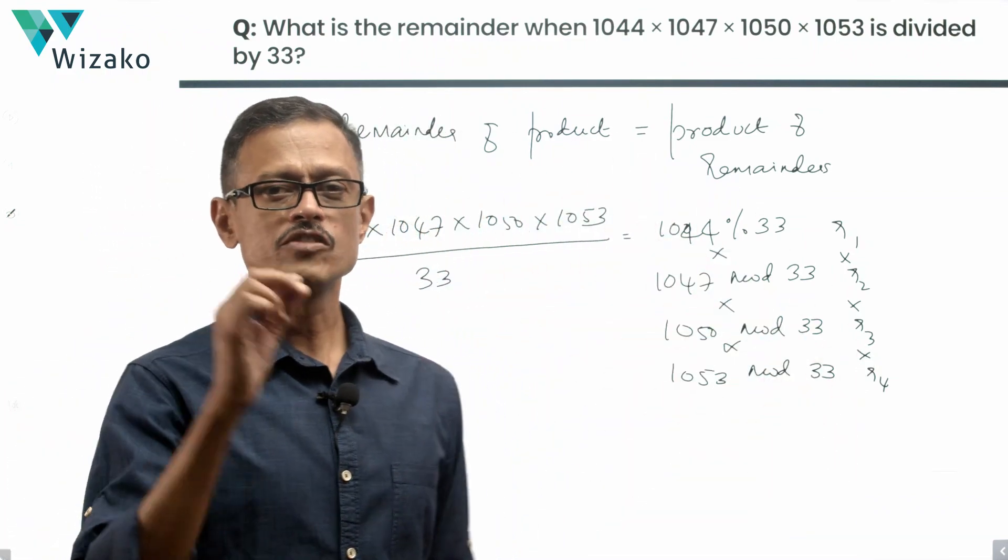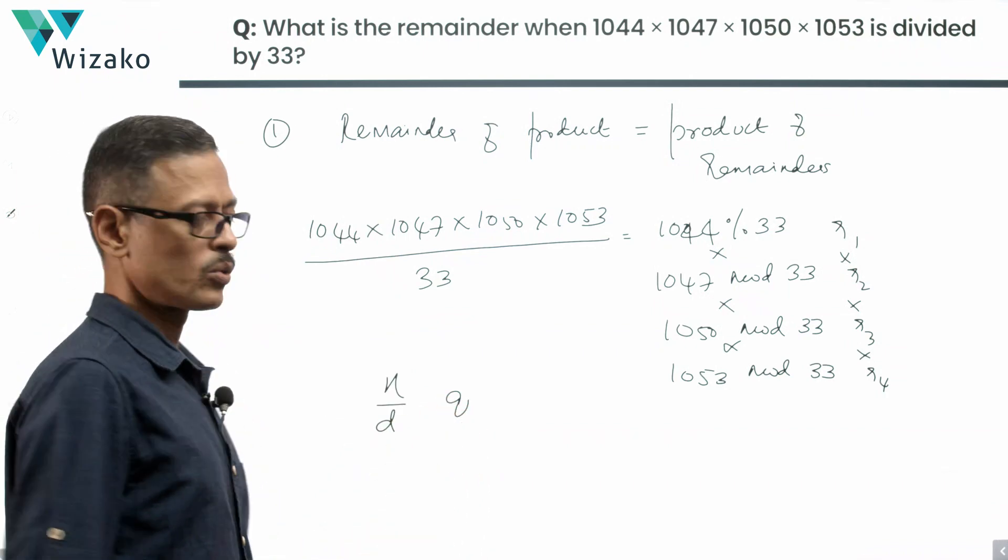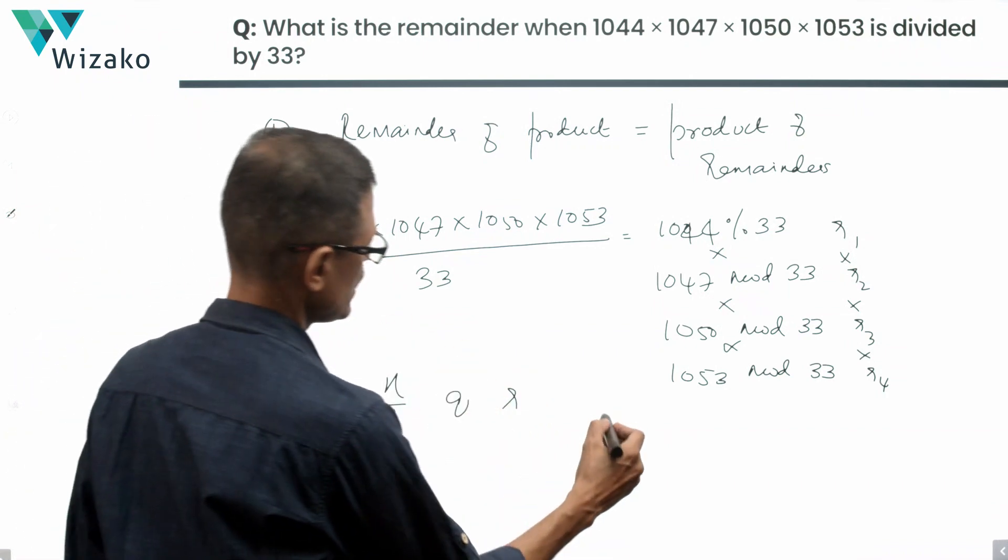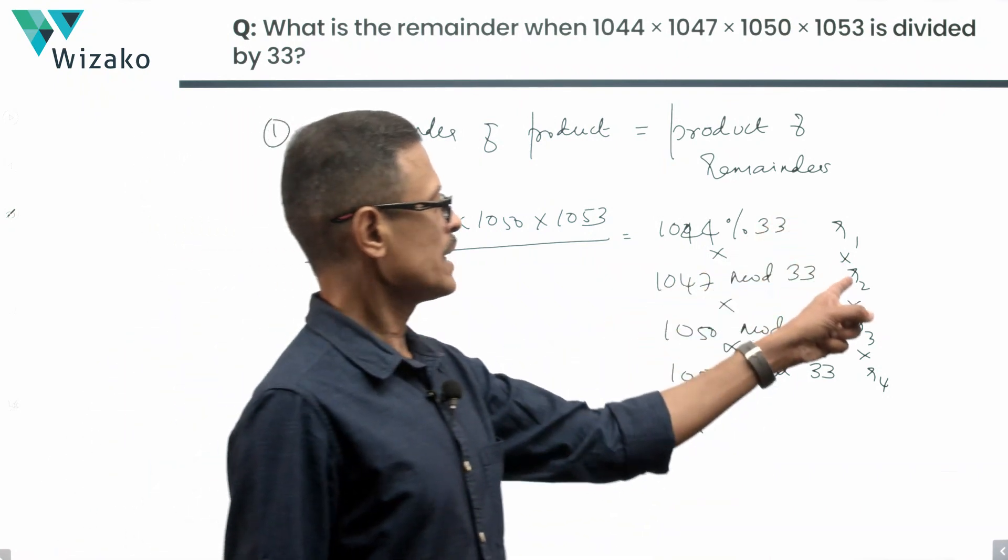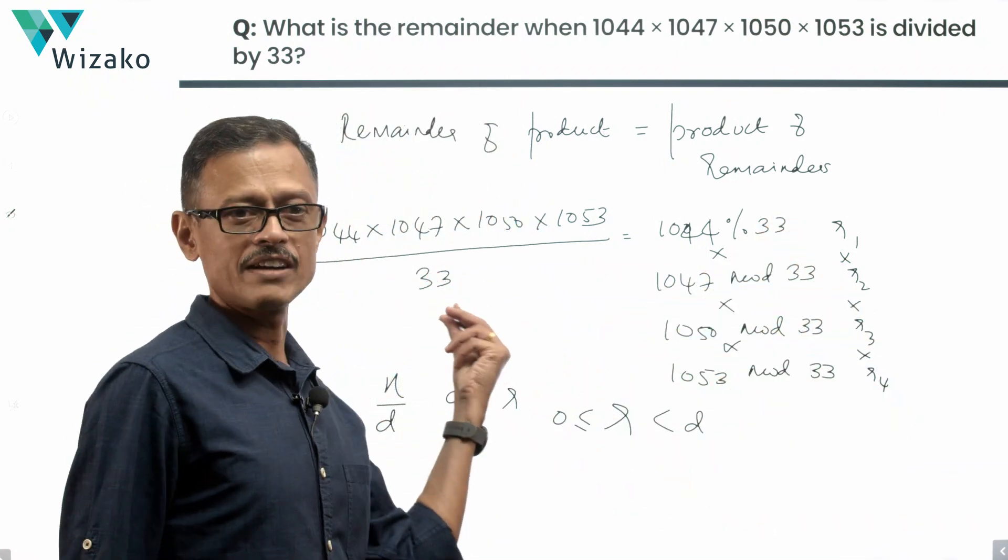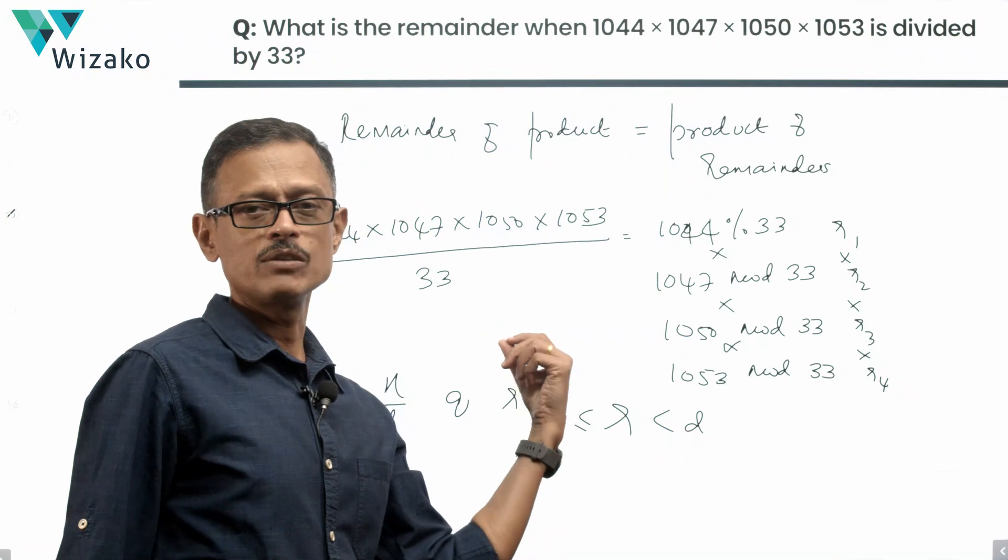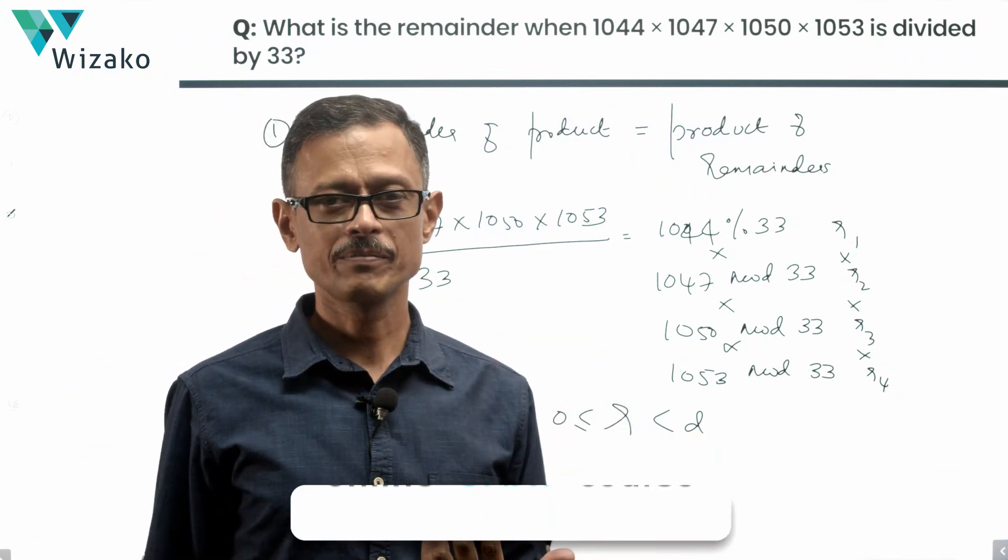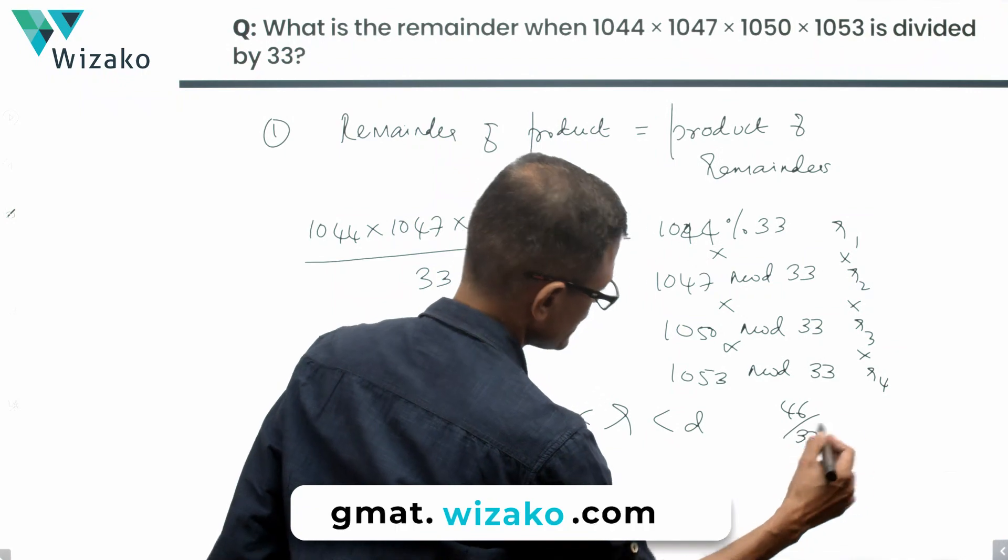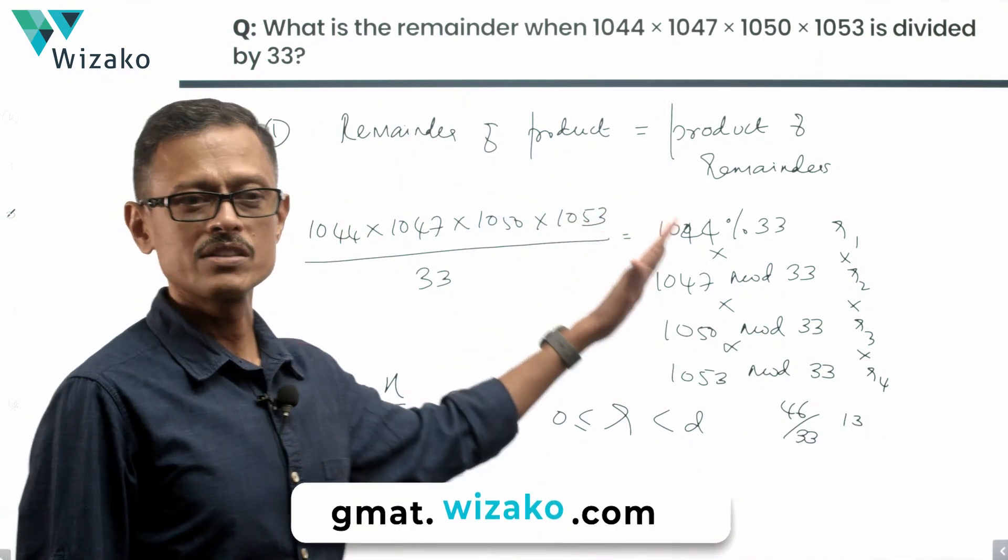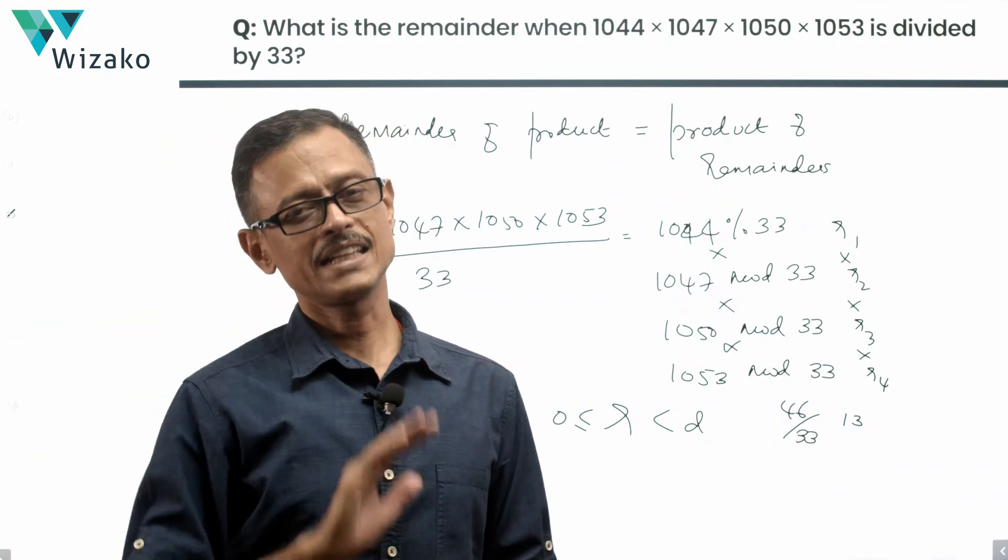Euclid's division lemma says that if I take a number n divided by a divisor d, I will find two integers where q is the quotient and r is the remainder. The value of r should range from 0 to a value less than the divisor. This r1 times r2 times r3 times r4 should never be greater than or equal to the divisor. If it ends up being 46, I'll divide it again by 33 to find the net remainder, which would be 13.